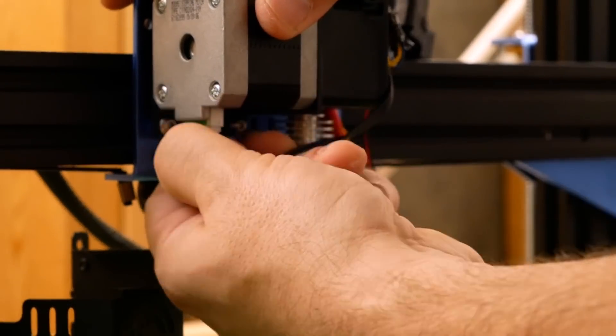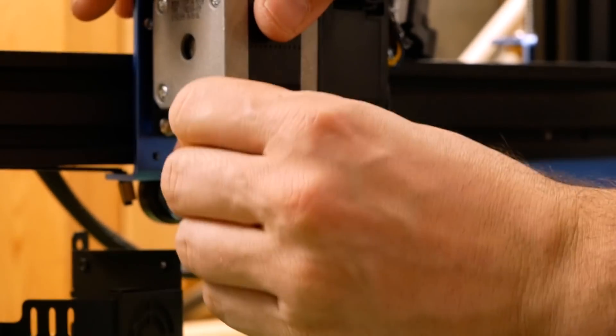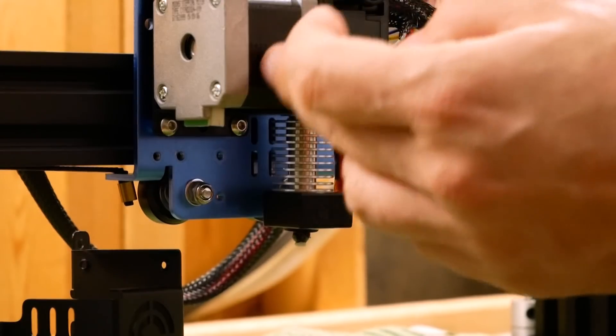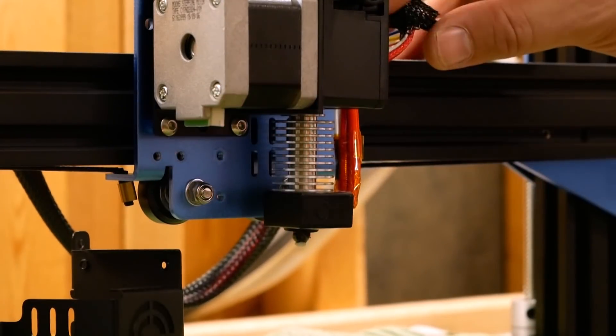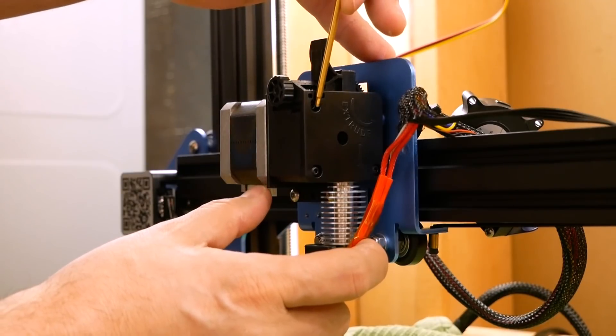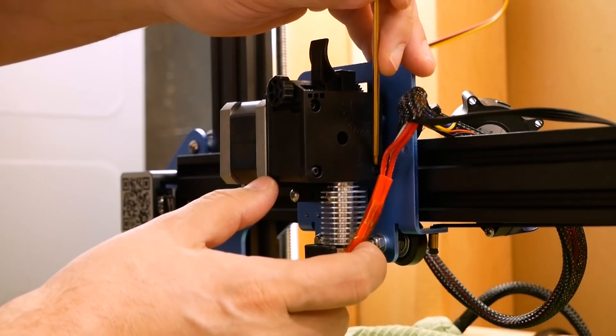At this point I'm going to unplug the x-axis stepper motor—oh no, that's the extruder, my bad. I'm going to unplug the extruder motor just to get that wire out of the way. And the next thing I need to do is remove this cover of the extruder by removing one, two, three screws.